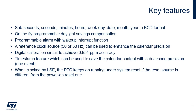The key features of the RTC are seconds, minutes, hours, weekday, date, month, and year, provided in binary-coded decimal format. Sub-seconds are also provided in BCD format. The calendar supports adding or removing one hour on the fly to manage daylight savings. One programmable alarm can wake up the microcontroller from sleep and stop modes. The calendar can be calibrated using a reference clock source, which is the mains at 50 or 60 Hz. A digital calibration circuit allows compensation of crystal accuracy with 0.954 ppm resolution. A timestamp function saves calendar contents in timestamp registers depending on an external event.